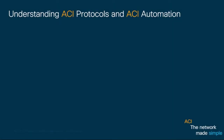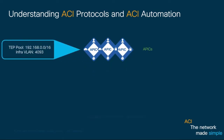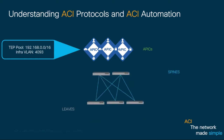If you remember, we just configured our APICs with a TEP pool and an Infrastructure VLAN. ACI will automatically discover the fabric elements such as spines and leaves through LLDP and DHCP, and APIC will provide DHCP offers from the TEP pool you defined. Internal communications such as this one will flow through your Infrastructure VLAN, which in our case is 4093.